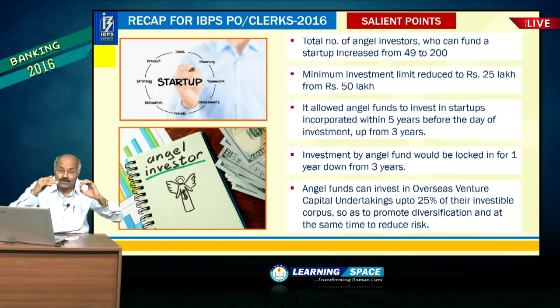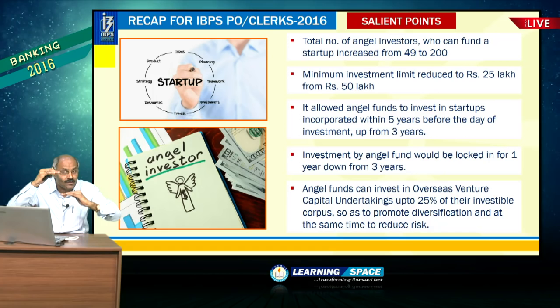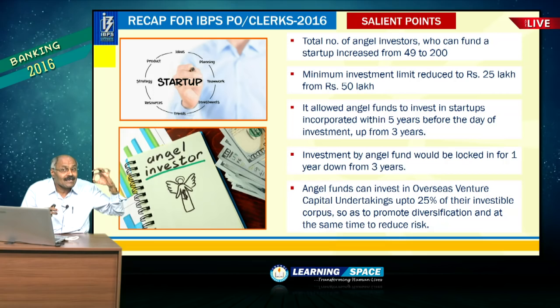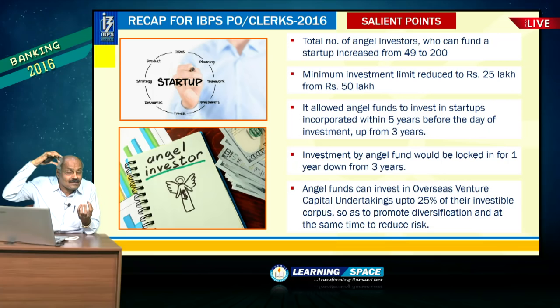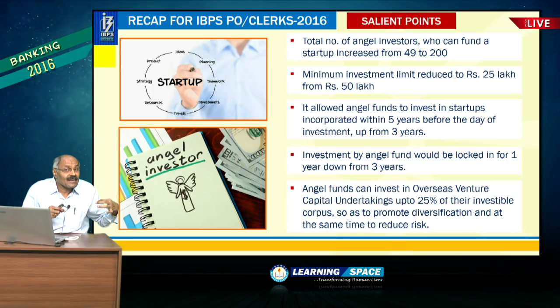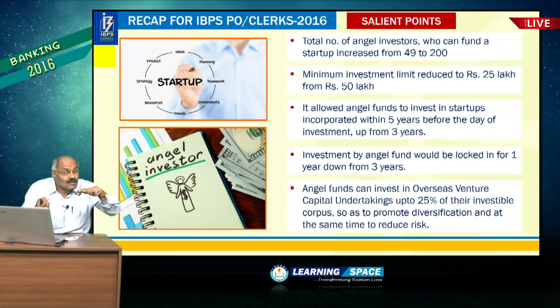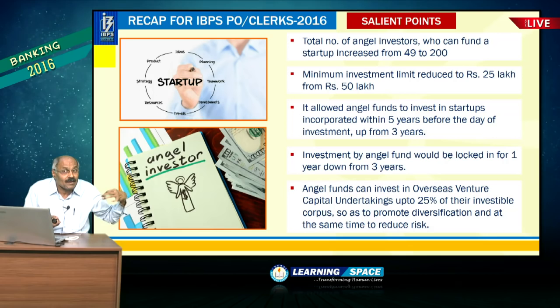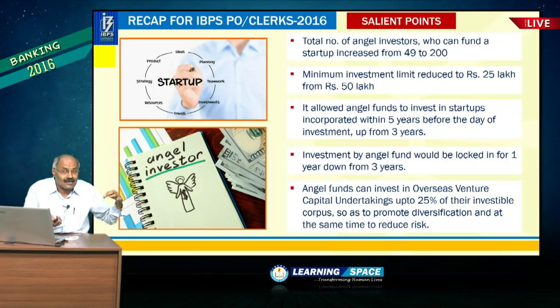Maximum angel investors raised from 49 members to 200 members. Second: the minimum investment limit reduced to Rs. 25 lakhs from Rs. 50 lakhs. Third: the lock-in period is reduced to one year from three years. Lock-in period means your investment is locked — you cannot sell it to another person. Alternative investment funds are regulated by SEBI.